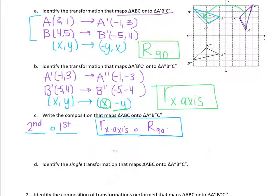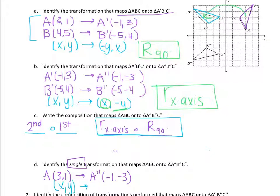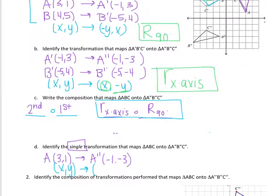Next they're asking us to identify a single transformation — one transformation that maps ABC onto the double primes. If I look at A (3, 1) mapping onto the double primes at (-1, -3), I can come up with a rule. It looks like X and Y are switching, but they're also doing something more. The positive 1 for Y becomes negative 1, and the positive 3 becomes negative 3 — so not only did they switch, but they also negated both. That rule — switch and negate both — gives a reflection over the line Y equals negative X.